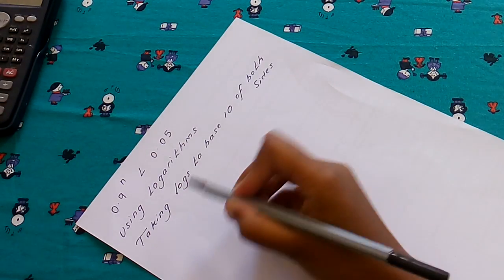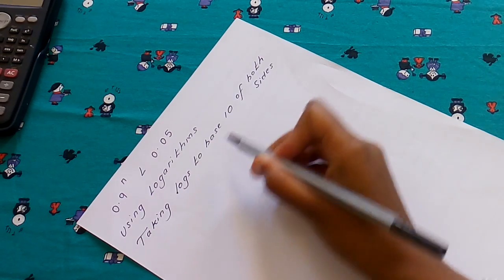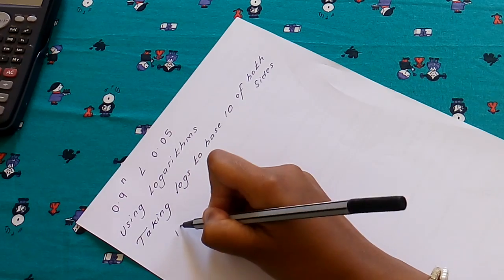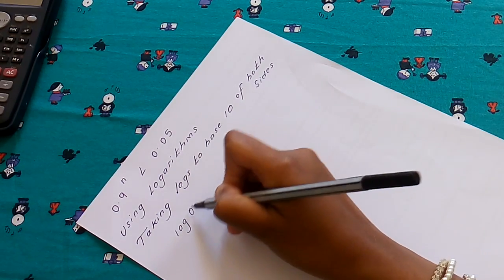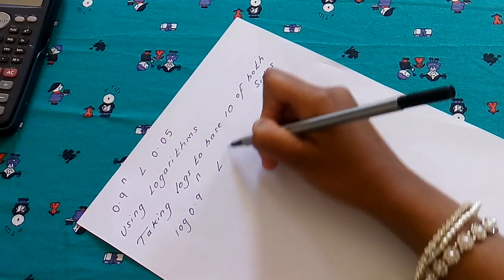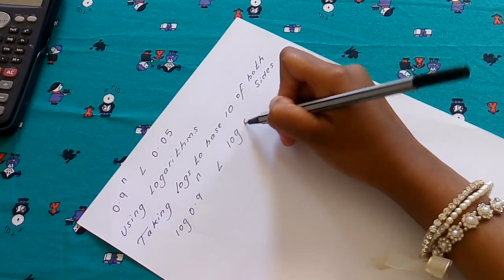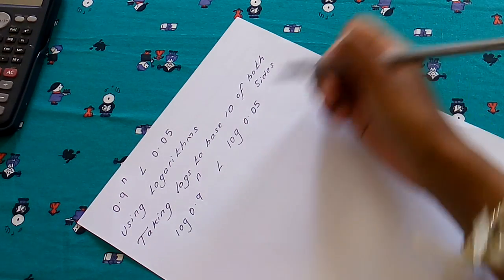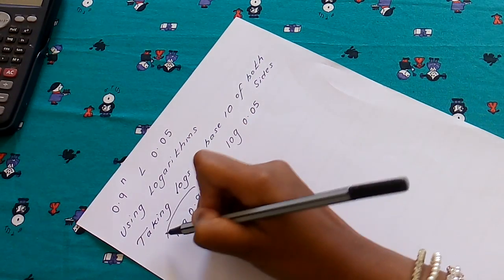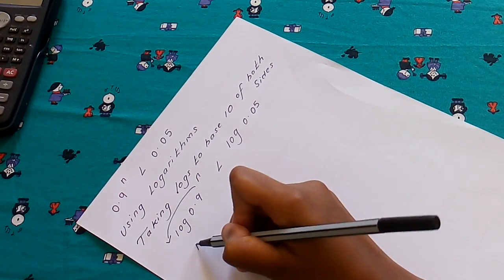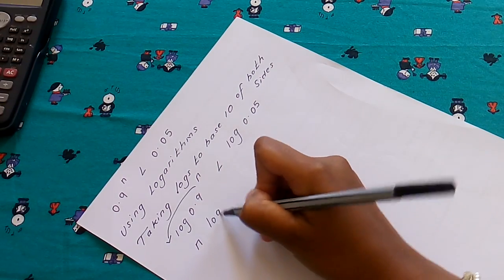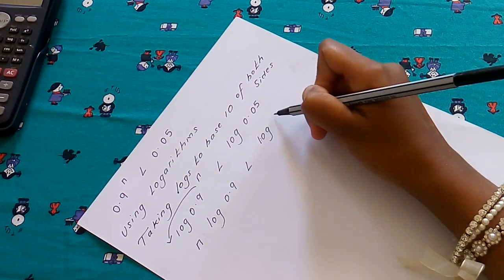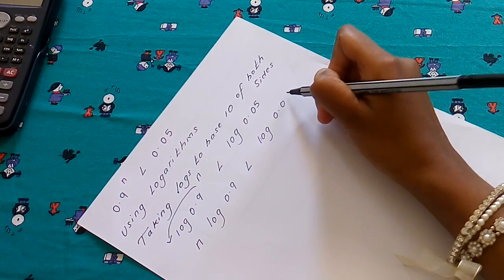Using logarithms, taking logs to base 10 of both sides: log(0.9^n) is less than log(0.05). Using the laws of log, we're going to send the n in front of the log. So we have n log(0.9) less than log(0.05).